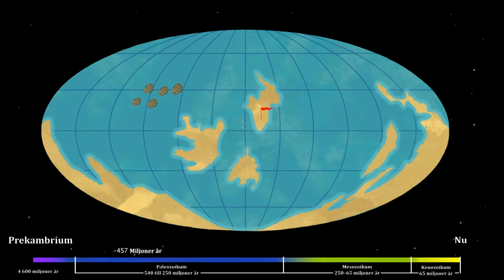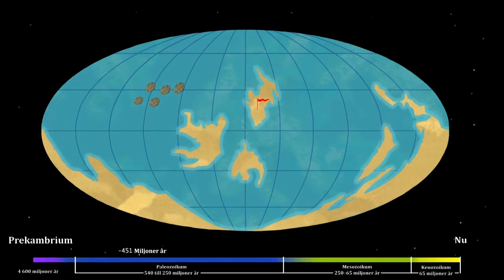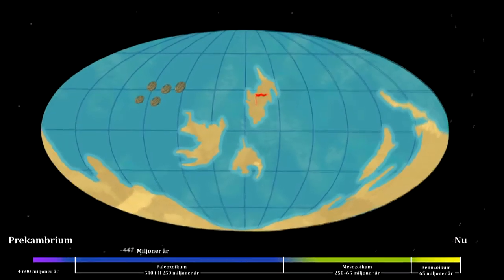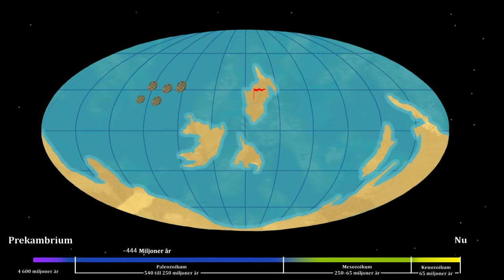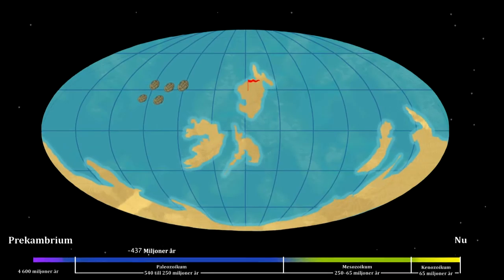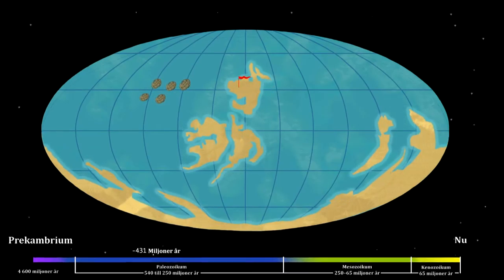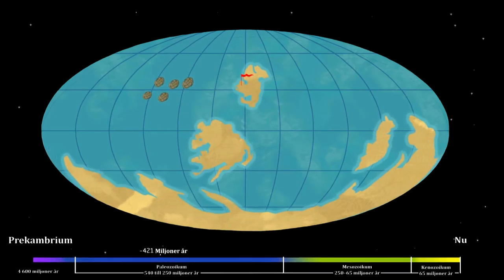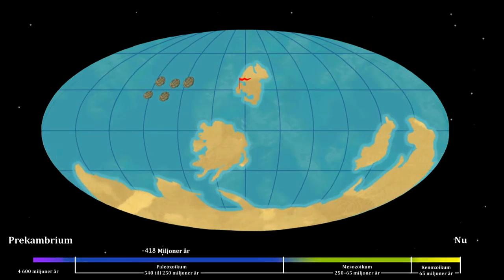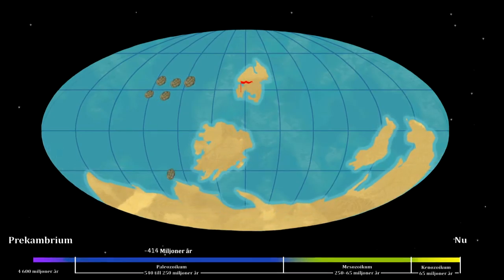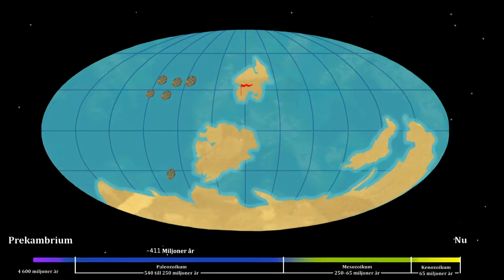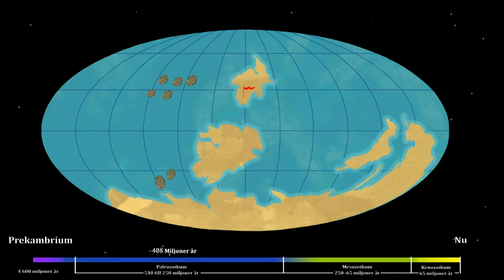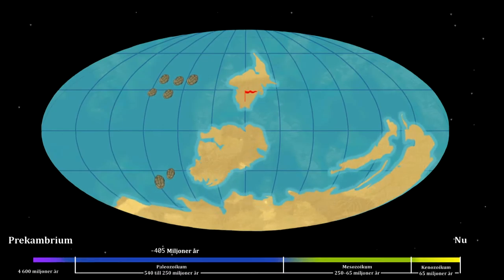A disaster: 450 million years ago, 85% of all species disappeared because of meteorite impacts and volcanic eruptions. Lucky our ancestors made it. New opportunities arose and the wildlife began to recover.